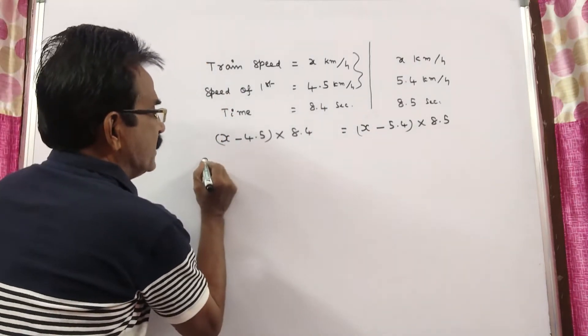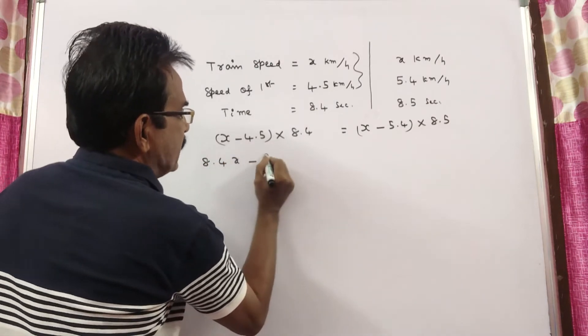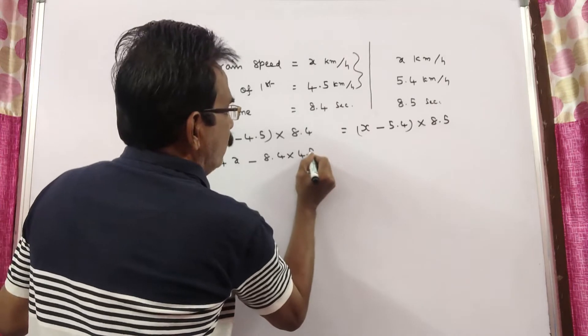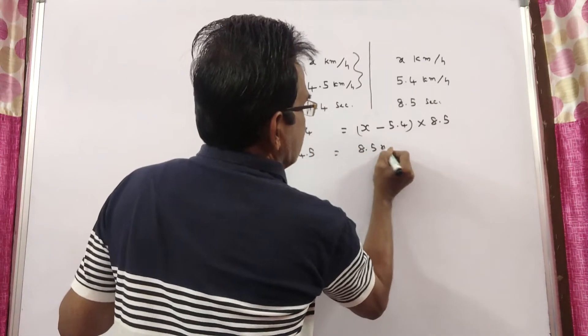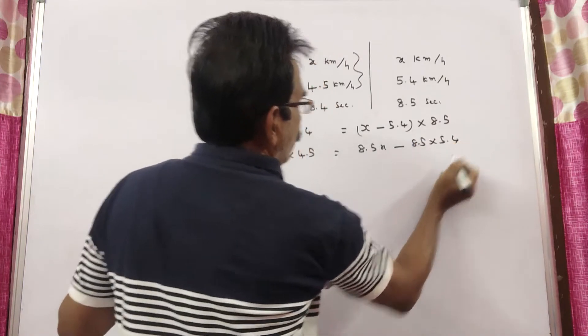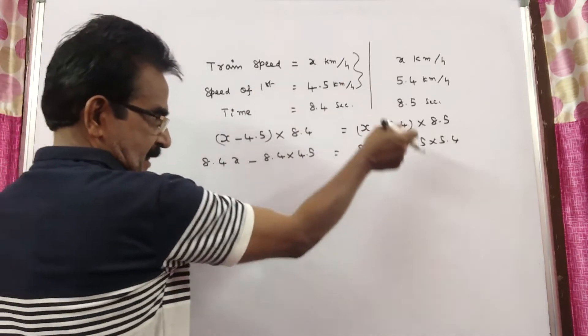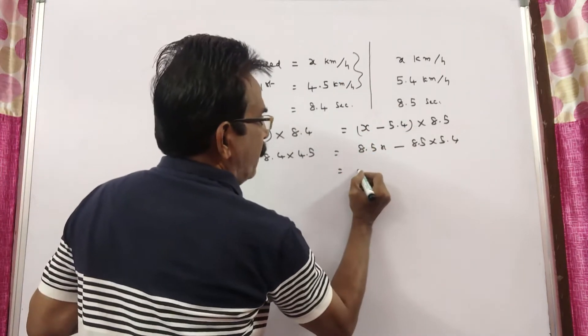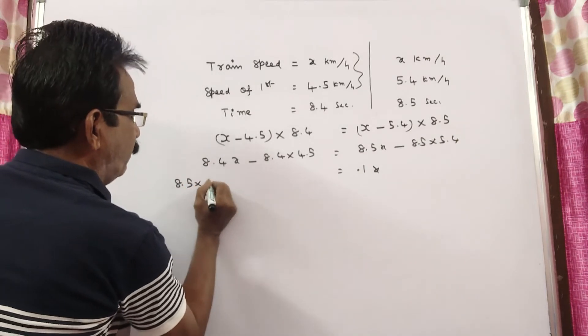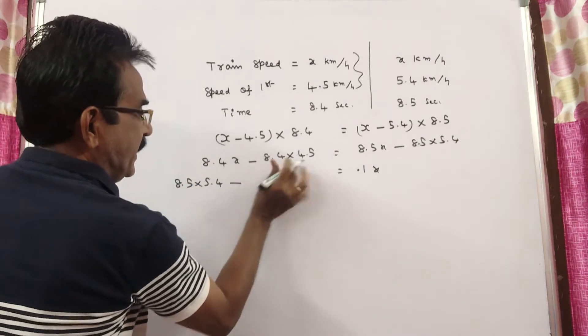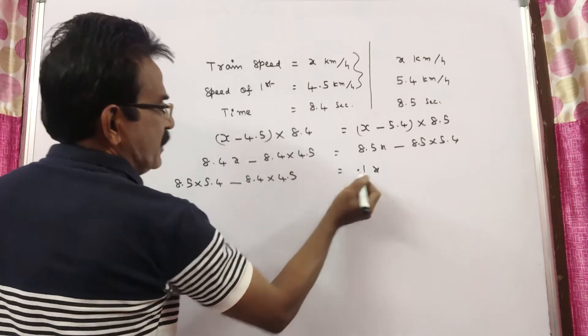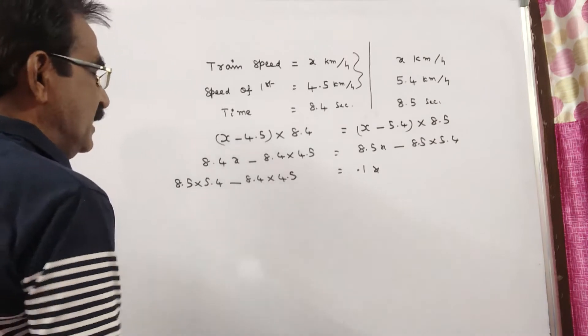Now, I am multiplying this. 8.4 into x minus 8.4 into 4.5 is equal to 8.5x minus 8.5 into 5.4. So, 8.5x minus 8.4x.